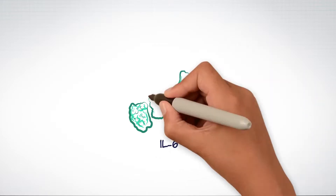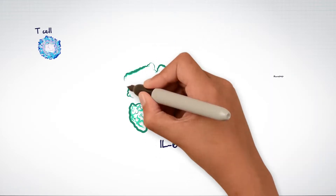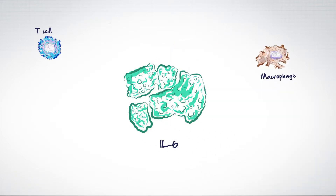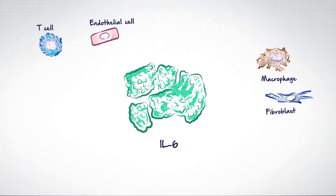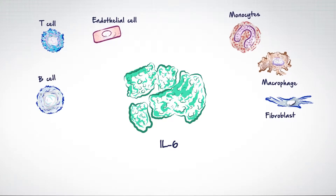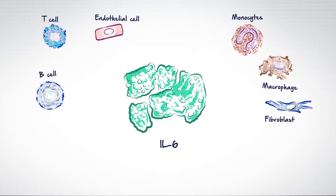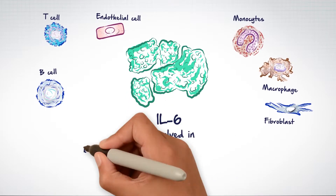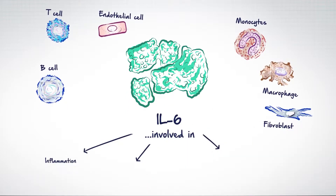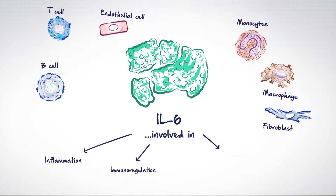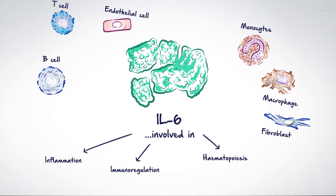Among these cytokines, interleukin-6, or IL-6, is considered particularly important as it is produced by multiple cell types and is involved in a wide range of biologic functions in the body, including inflammation, immunoregulation, and hematopoiesis.